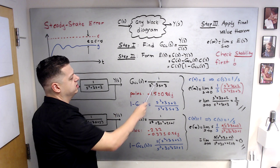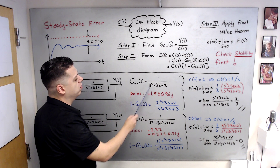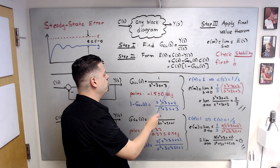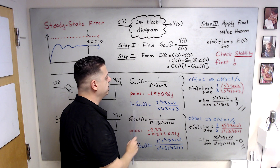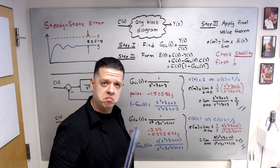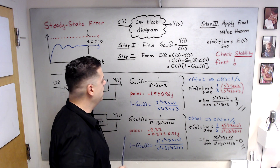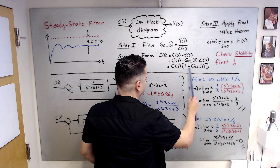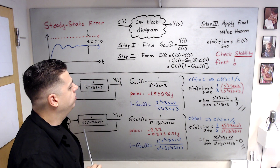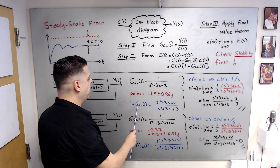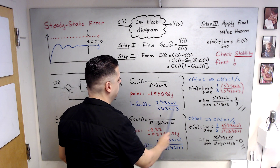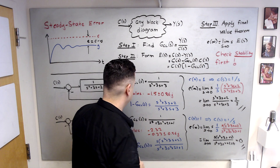For this example, we first find the closed-loop transfer function: G_CL = 1 divided by (s² + 3s + 3). Checking stability — the poles are located at −1.5 ± 0.86j. The closed-loop system is stable, so we can proceed. Now I find (1 − G_CL), which equals (s² + 3s + 2) divided by (s² + 3s + 3).